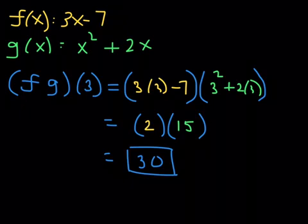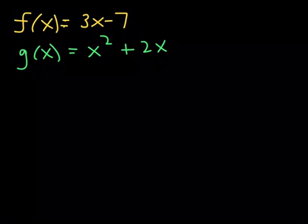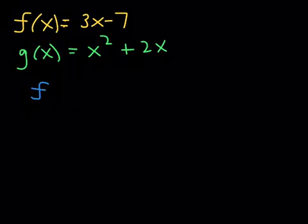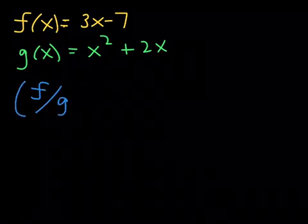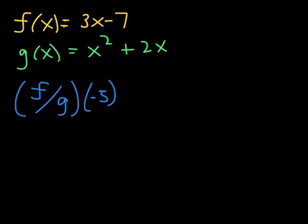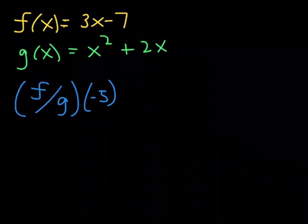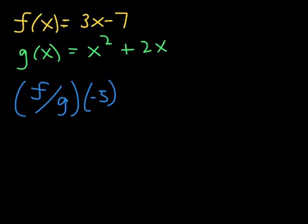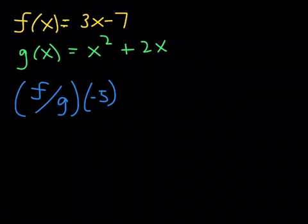The same two functions we've been dealing with. This time around, this will be the last kind of example like this. Please find f divided by g at negative 5. f divided by g is a quotient function, and you are plugging negative 5 in. Give this a shot. Please pause the video, give this a shot, and I'll check in with you in just a second.